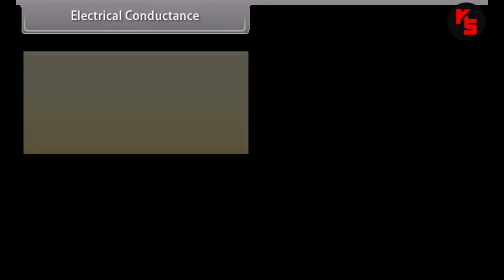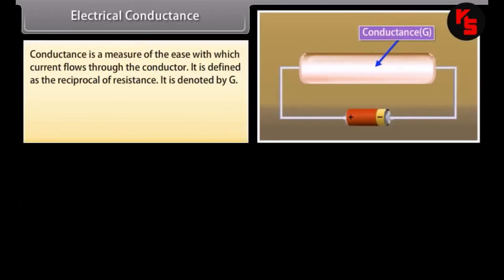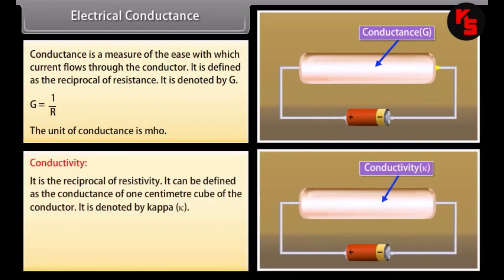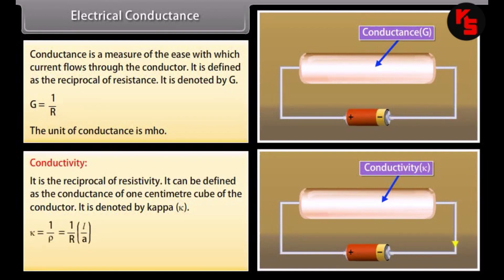Electrical conductance. Conductance is a measure of the ease with which current flows through the conductor. It is defined as the reciprocal of resistance, denoted by G: G = 1/R. The unit of conductance is mho. Conductivity is the reciprocal of resistivity; it is defined as the conductance of 1 cm³ of the conductor, denoted by κ: κ = L/(R × A). The unit of conductivity is mho·cm⁻¹.